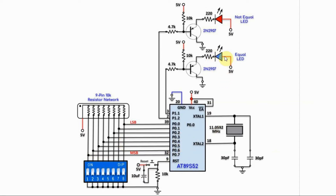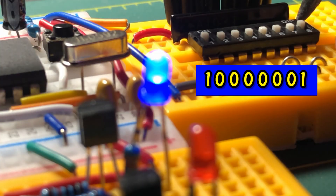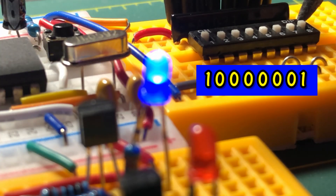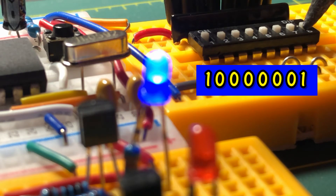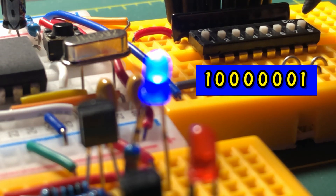If the input number from the DIP switch is equal to the number in the accumulator, then the blue LED will turn on. Otherwise, if the values are not equal, the red LED will turn on. And now for a quick demonstration — the value stored in the accumulator is 81 hexadecimal.